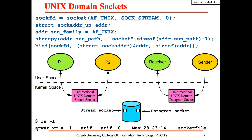As shown in this diagram, Unix domain stream sockets are bi-directional — processes can send and receive data via them. On the contrary, Unix domain datagram sockets are unidirectional; you can only send information in one direction, as is the case with named pipes.